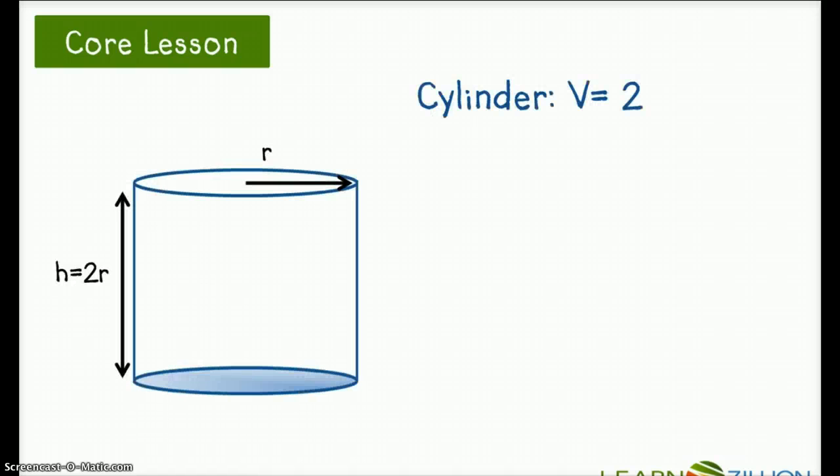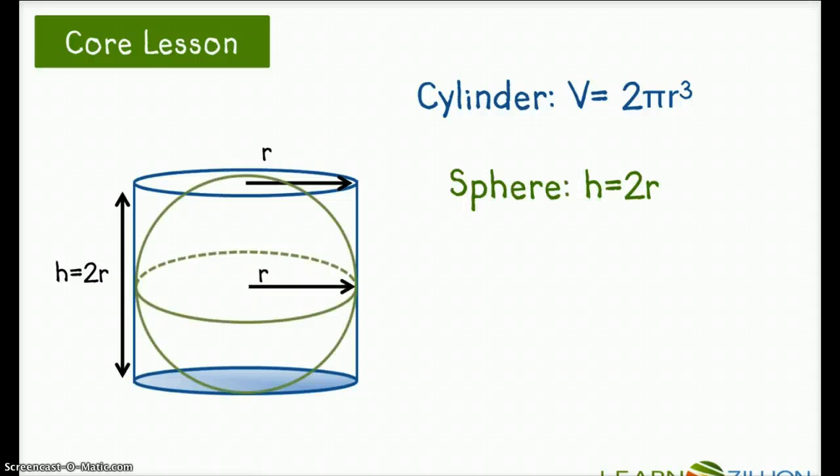Let's compare our cylinder with the volume of 2πr³. And now we'll compare it to a sphere with the same height and the same radius. How can we use what we know about the cylinder to find the volume of this sphere? Notice the sphere has a volume that is less than the cylinder, even though they both have the same height and same radius.